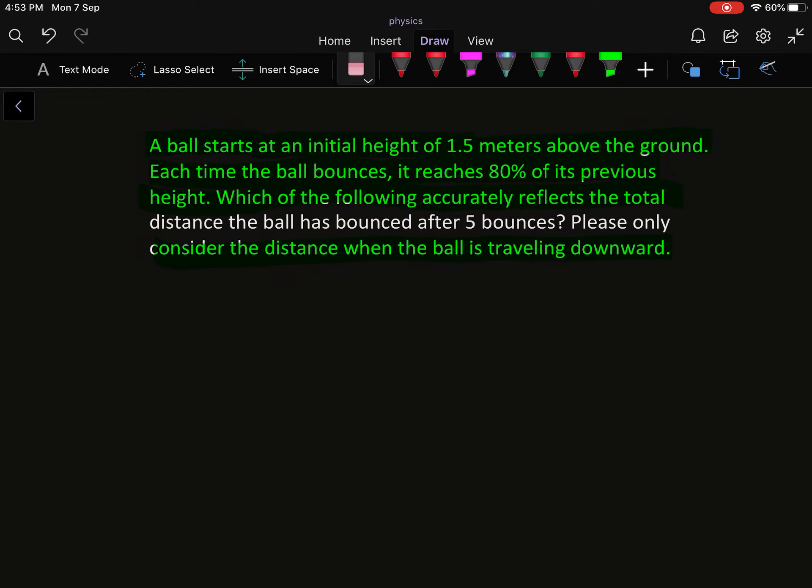So after 5 bounces. What happens? Initially it is at 1.5 meters. So the ball is at 1.5 meters. Till the first bounce it will travel 1.5 meters, correct? Then it bounces back and it will attain a height of 1.5 × 0.8 meters.